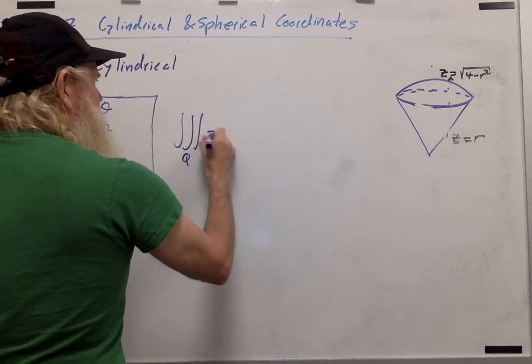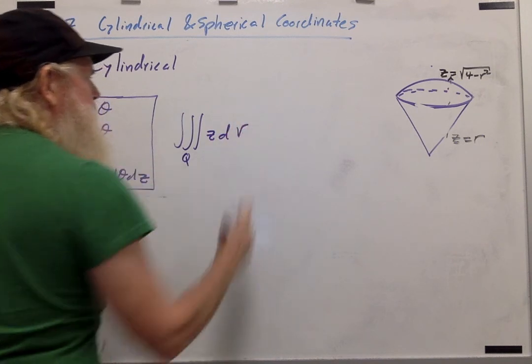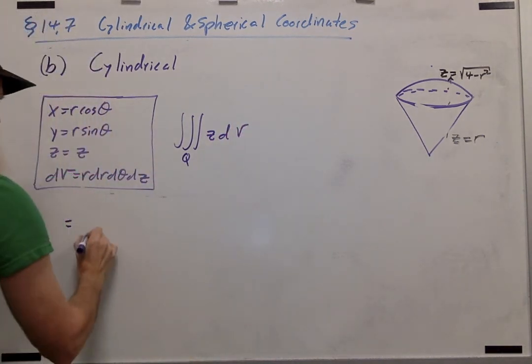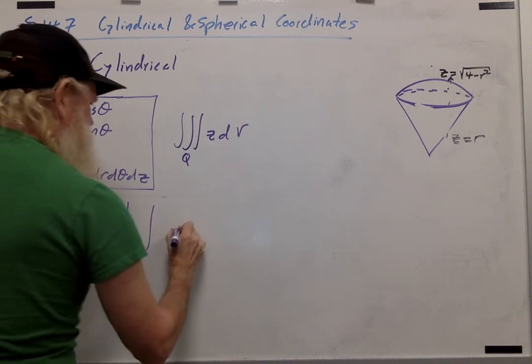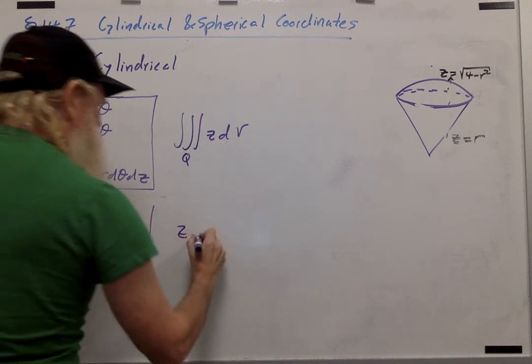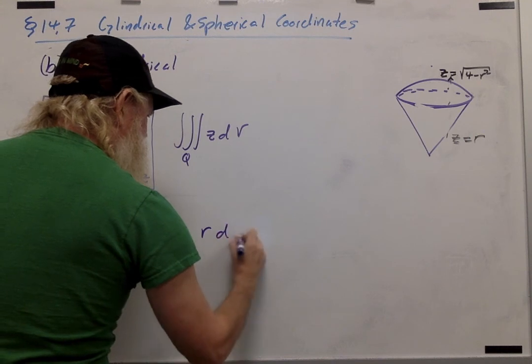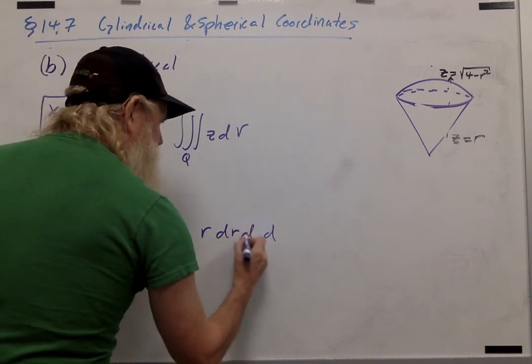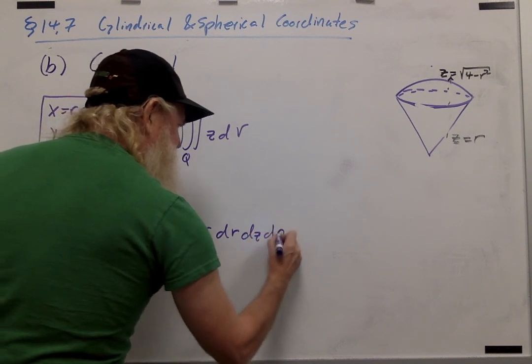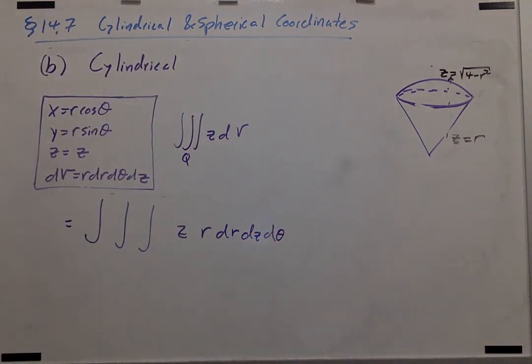And recall that we're trying to set up the integral for z dV. So again, we're going to substitute in z is still z, dV is r d something, d something, d something. But we're going to try setting it up in the order dr dz dtheta instead.